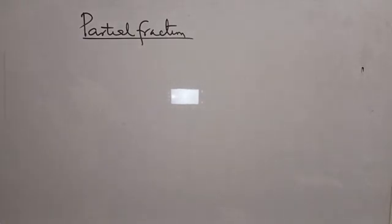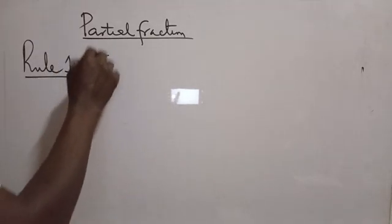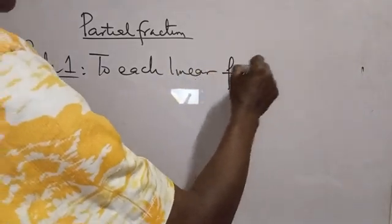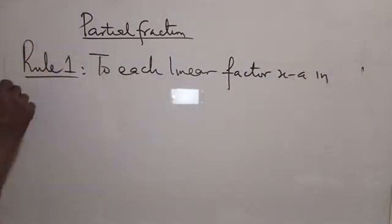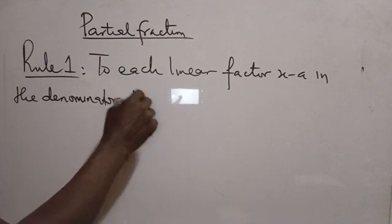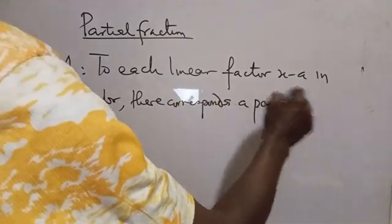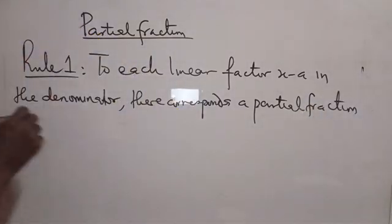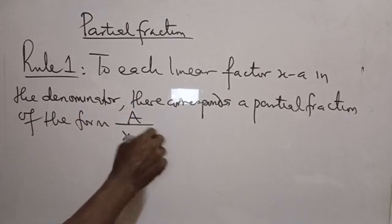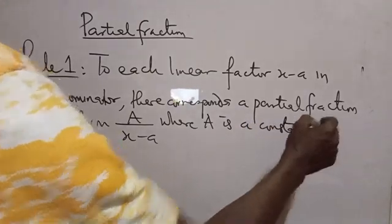What does the first rule state? Rule 1 states that to each linear factor X minus A in the denominator, there corresponds a partial fraction of the form A all over X minus A, where A is a constant. This is Rule 1 of Partial Fractions.